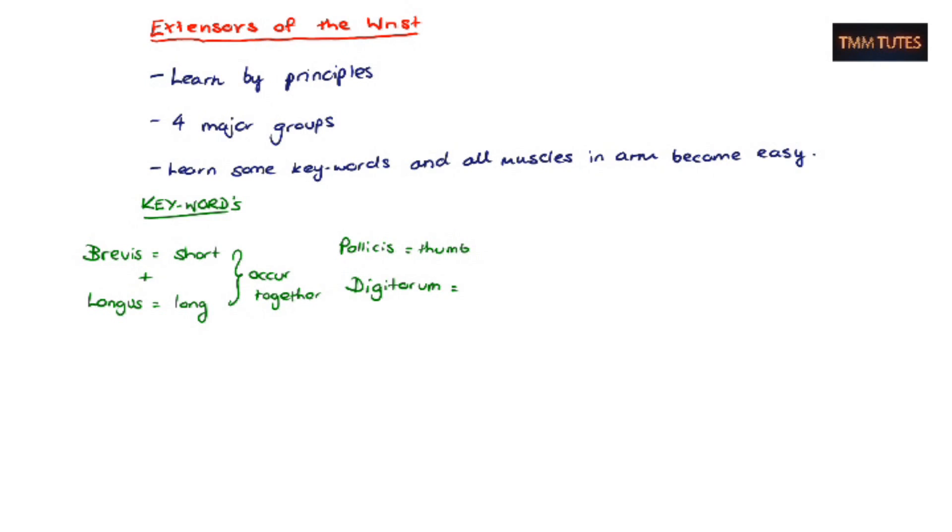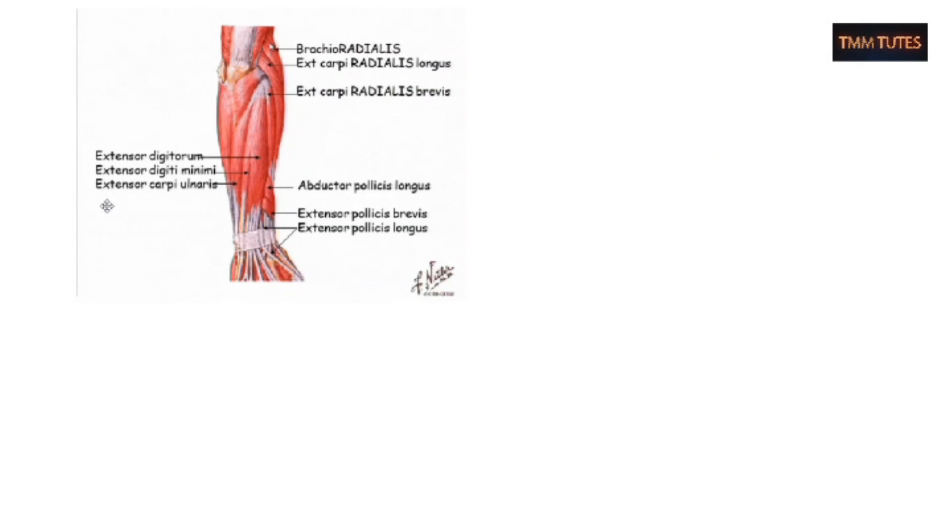So pollicis is a thumb muscle and digitorum just means that the muscle goes to the digits, so the fingers. We've got carpi which means that it inserts into the arm, so this is involved in wrist movements rather than the actual finger movements. And abduction and adduction or deviation as I'll discuss later. All these keywords go for both flexors and extensors and also on the leg as well.